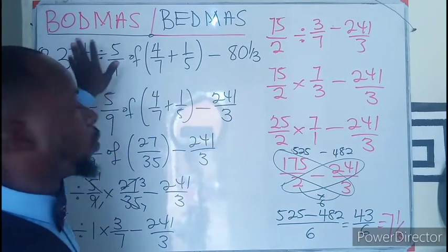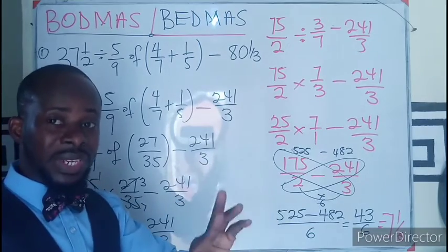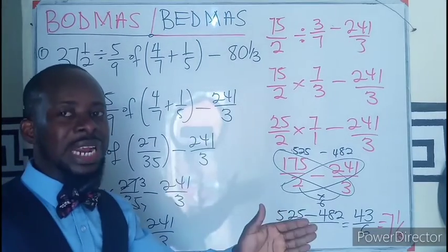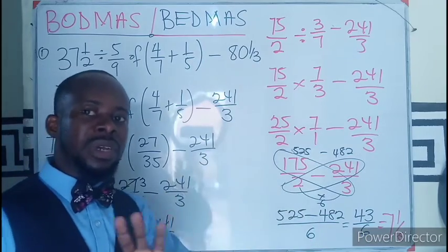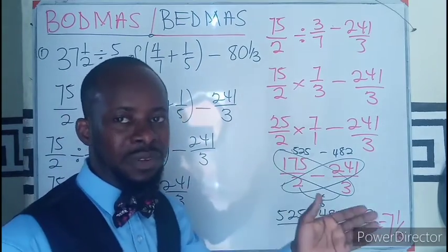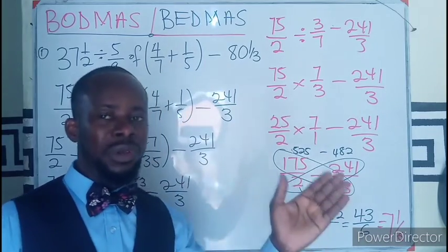So when it comes to BODMAS or BEDMAS, you only follow the order. Don't forget, multiplication and division are together. Both can be tackled from each other, meaning you can start with division and multiplication, if you are moving from left going to right.